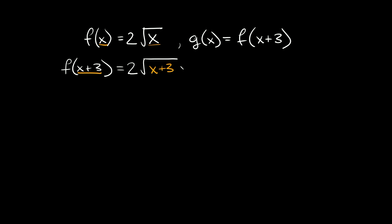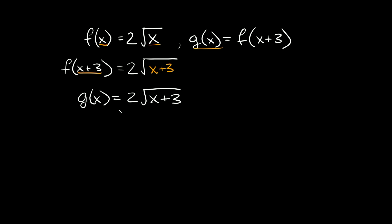There's nothing to combine and nothing to simplify, so this is as simplified as our answer can get. Remember f of x plus three is the same thing as g of x, so g of x is simply equal to two times the square root of x plus three. That'd be our final answer.